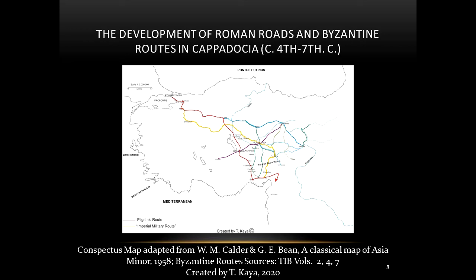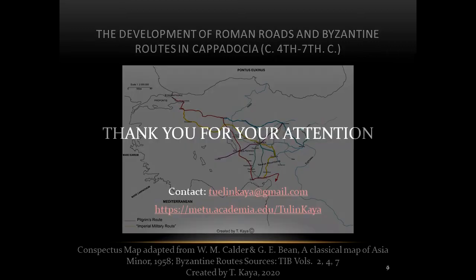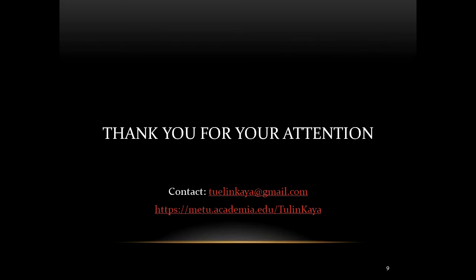In 626, peace was established between the Persians and the Byzantines. To sum up, it seems that the two main routes in Byzantine Cappadocia were used for administrative and military purposes on the eve of the Arab raids, which changed the history of communication routes of Asia Minor from the second half of the seventh century onwards. Thank you for your attention.